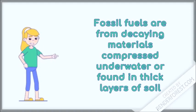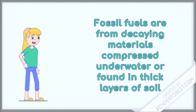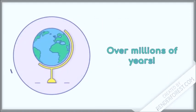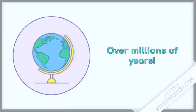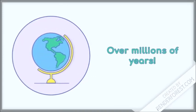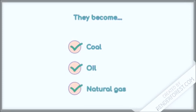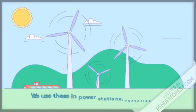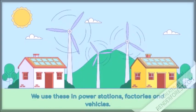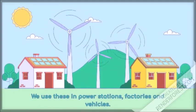Fossil fuels are from decaying materials compressed underwater or found in thick layers of soil. These decaying materials are there for over millions of years. They become coal, oil, or natural gas, which in turn we use for our power stations, factories, and vehicles.